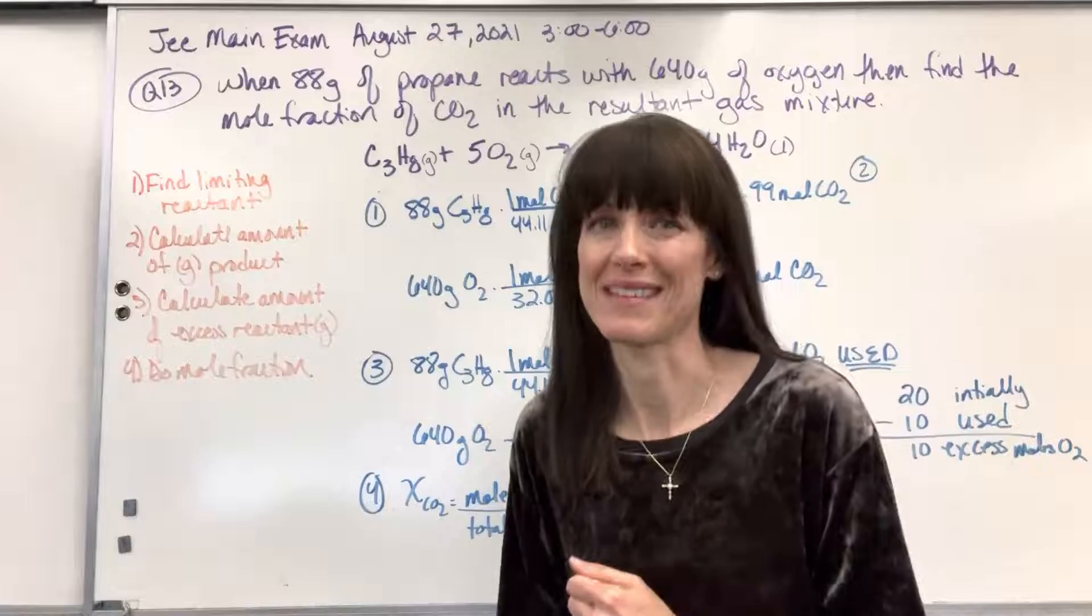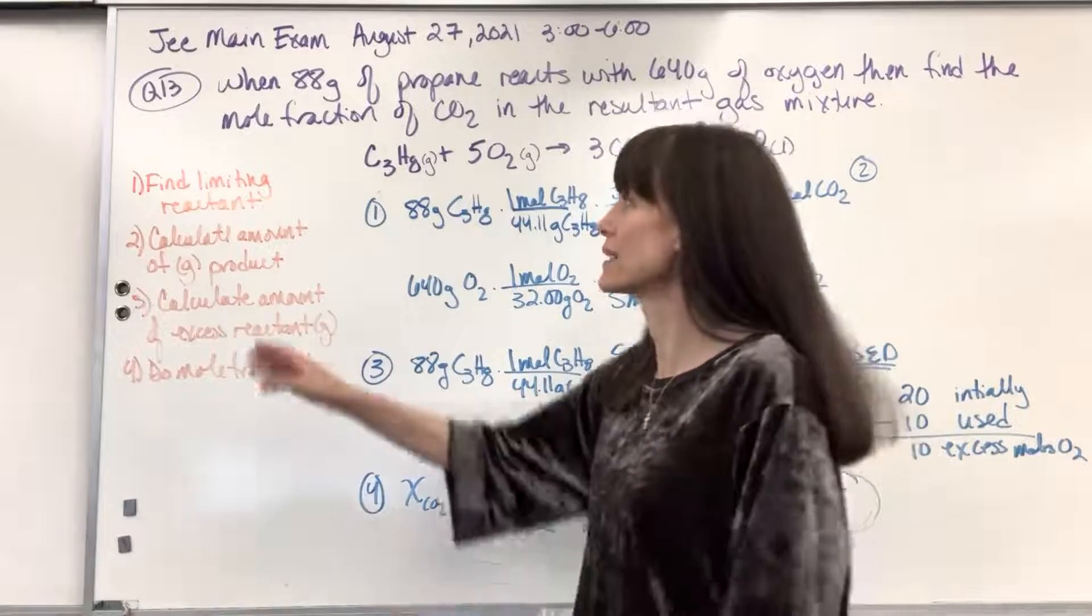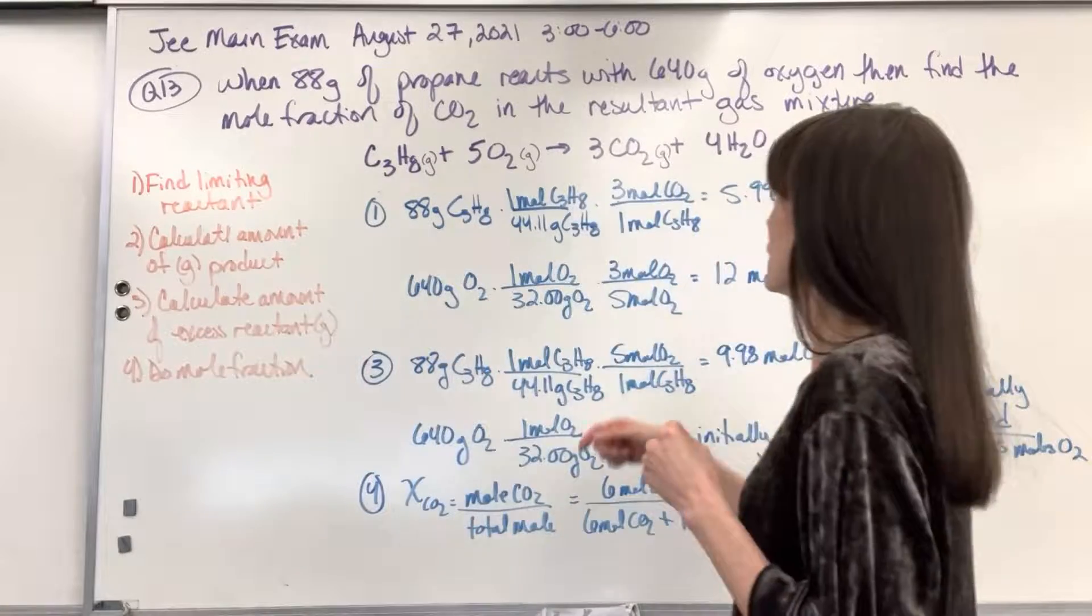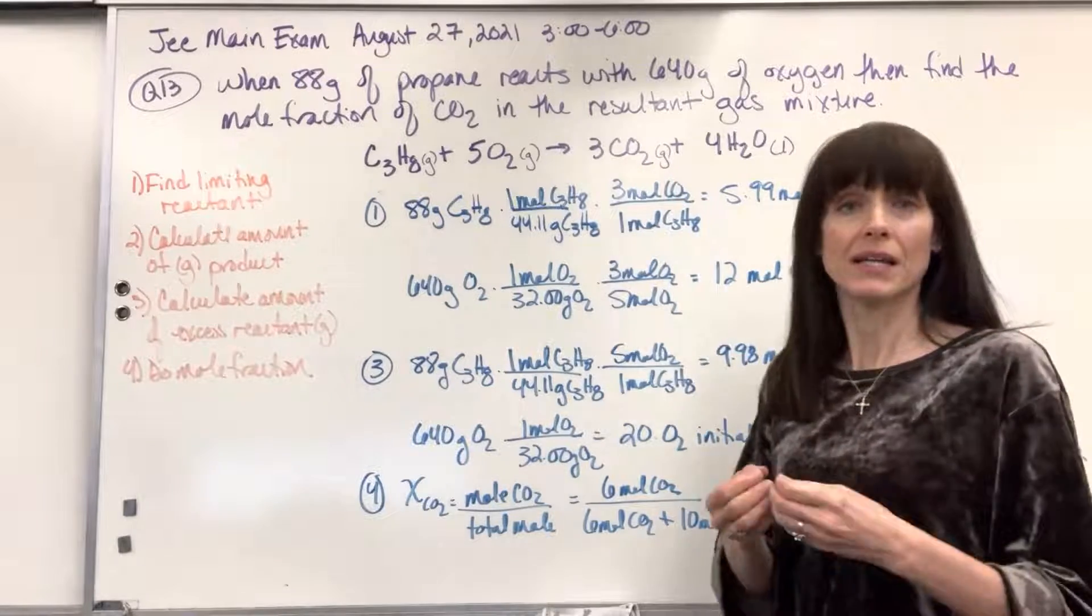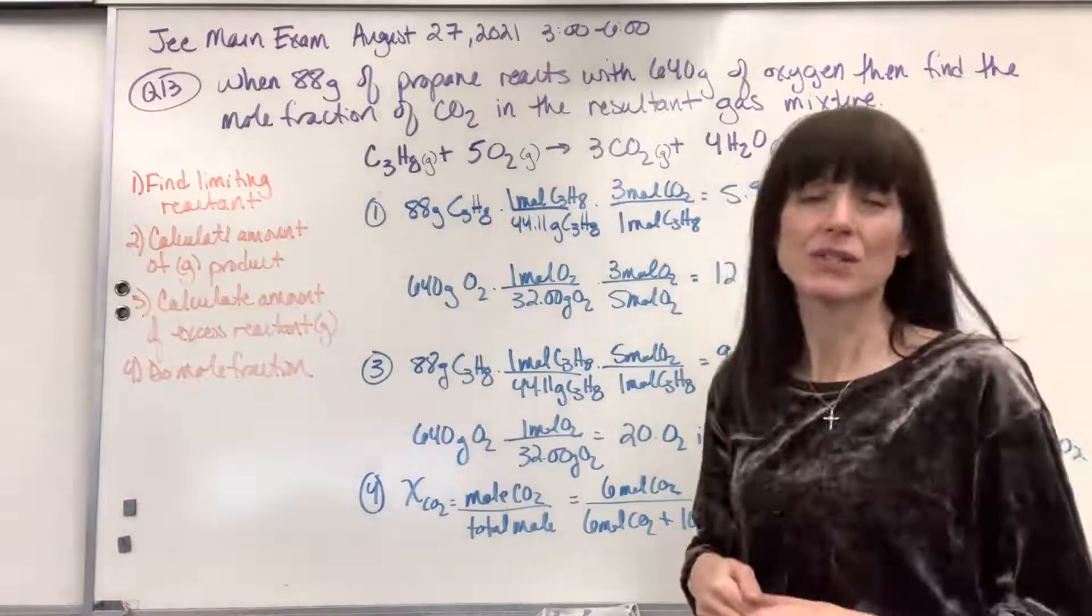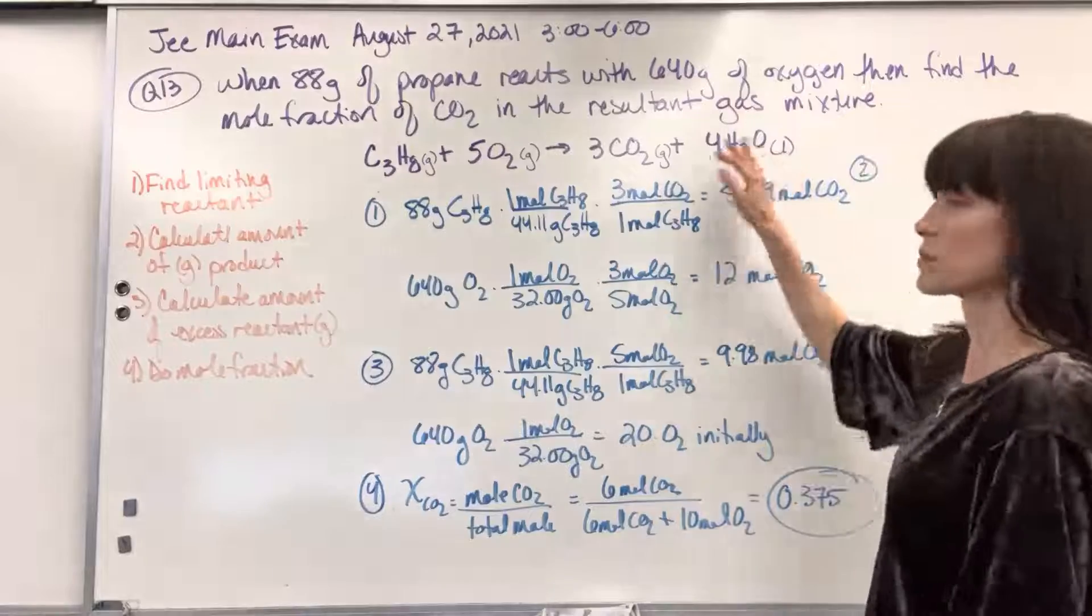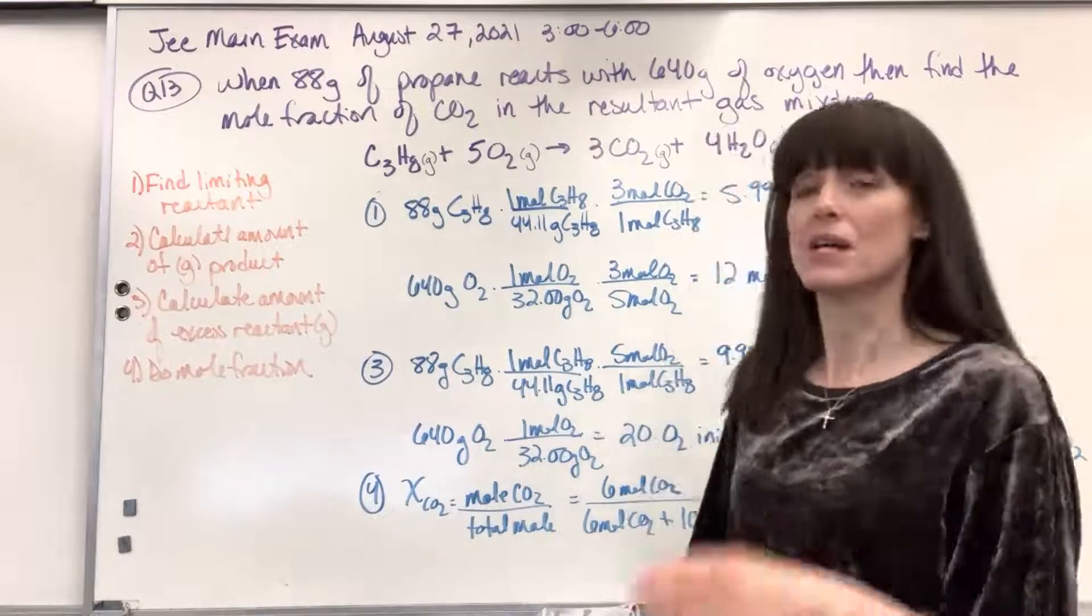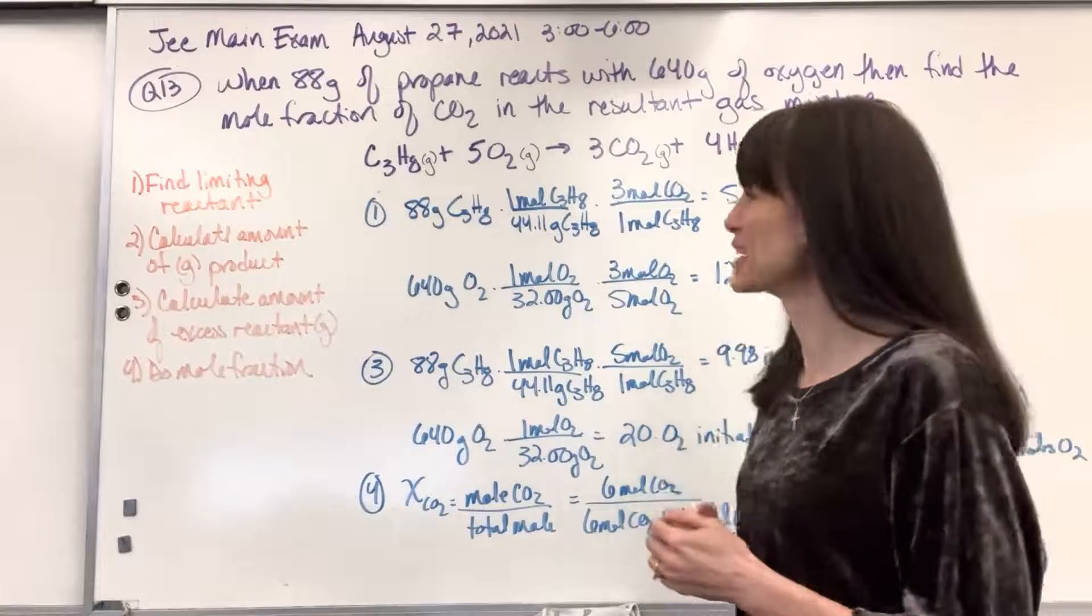So I made a recipe list of how I would solve this. First, I'm thinking, okay, what's the limiting reactant? Number two, I'm going to make sure I identify the amount of gas products that are formed by that limiting reactant. Now notice the CO2 is a gas and the H2O is a liquid. So for the mole fraction, because they want the mole fraction of the gaseous mixture, I don't have to worry about finding out the amount of that H2O that's going to be produced. It's only the gases, so only the CO2 product they're going to be looking at on the product side.